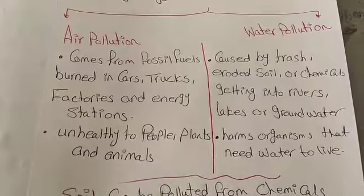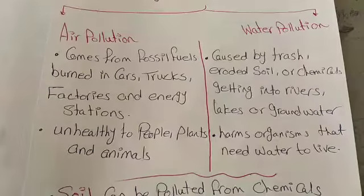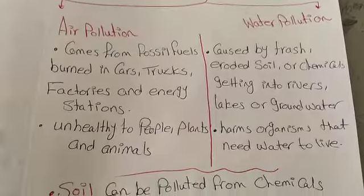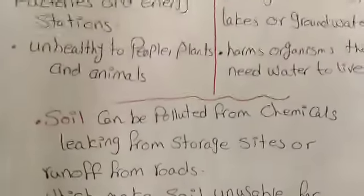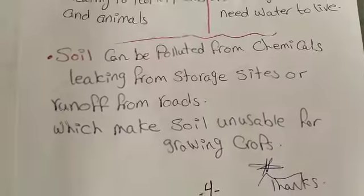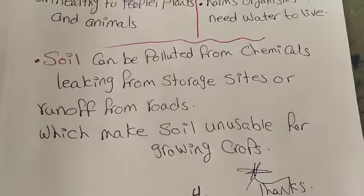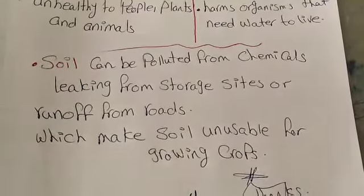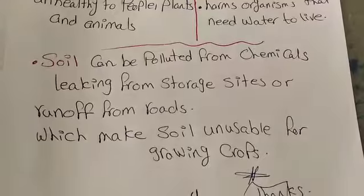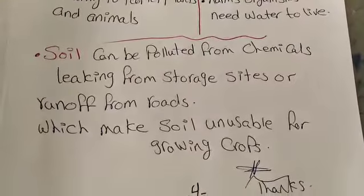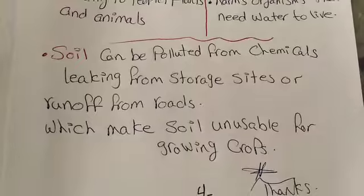Air pollution and water pollution are unhealthy to people, plants and animals, and other organisms. Soil can be polluted from chemicals leaking from storage sites or run off of roads, which makes soil unusable for growing crops.